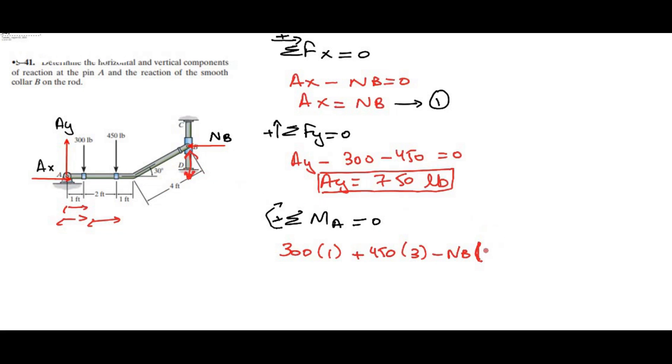Now this perpendicular distance is 4 sin 30. From here, if you simplify it, NB is equal to 825 lbs. This is our second answer.